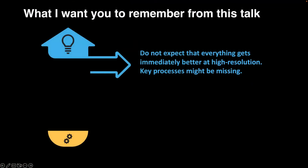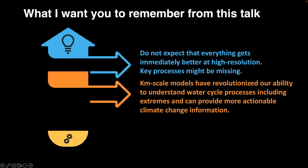To conclude three key takeaways: first, don't expect everything to immediately improve at high resolution — some things may even get worse, because deep convection schemes are often used to tune out errors, and removing that tuning reveals what processes are actually missing, like the soil-atmosphere coupling I showed. Second, this area of research has really revolutionized our ability to understand the water cycle and project it into the future, and this field is growing fast. The global vision is within reach in the next 5 to 10 years.